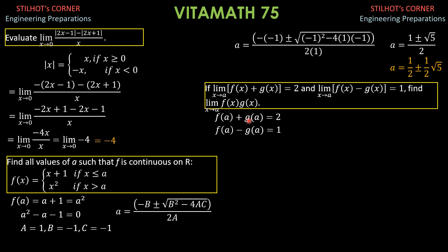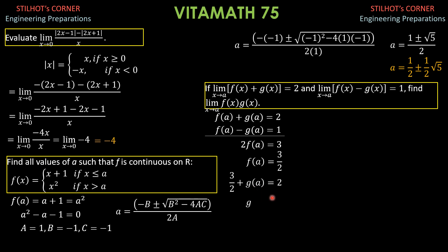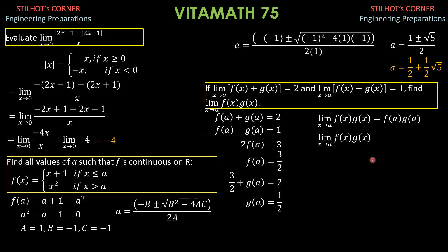Adding the two equations to eliminate g(A), we get 2·f(A) equals 3, so f(A) equals 3/2. Substituting back: 3/2 plus g(A) equals 2, so g(A) equals 2 minus 3/2, which is 1/2. Then the limit of f(x) times g(x) as x approaches A equals f(A) times g(A), which is 3/2 times 1/2, equal to 3/4.